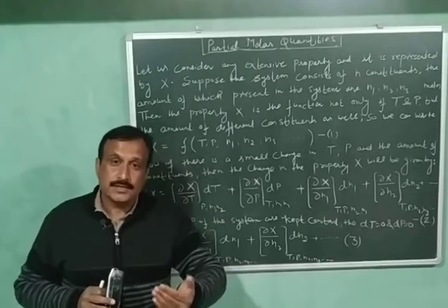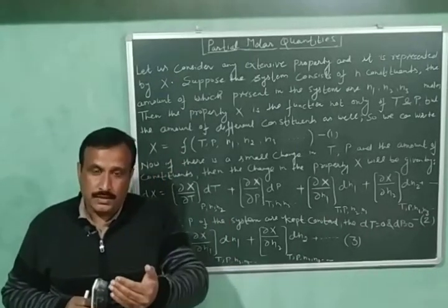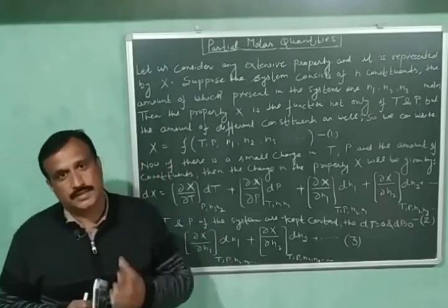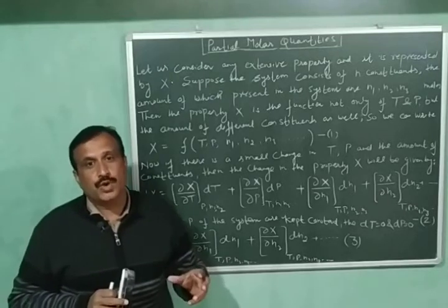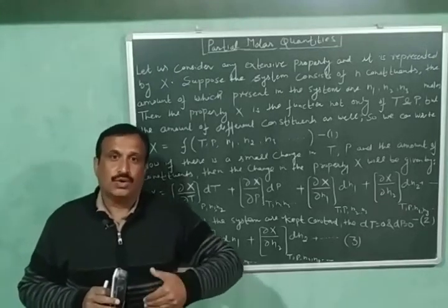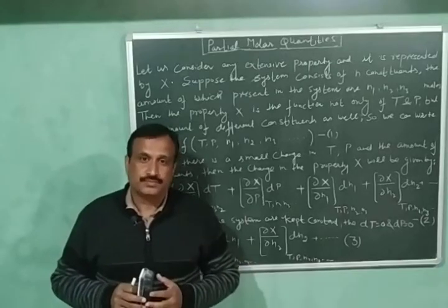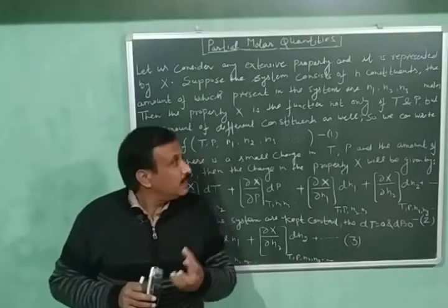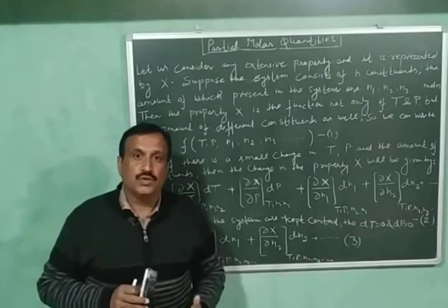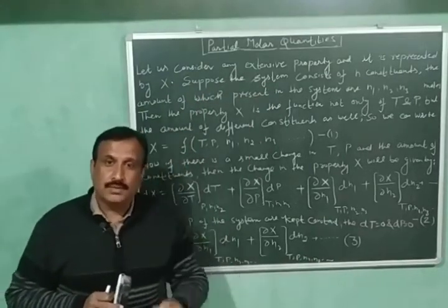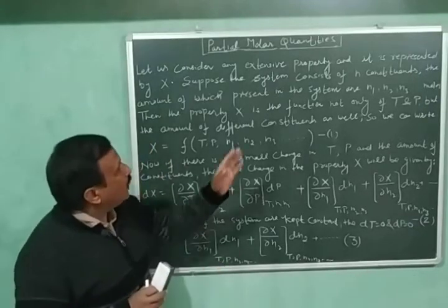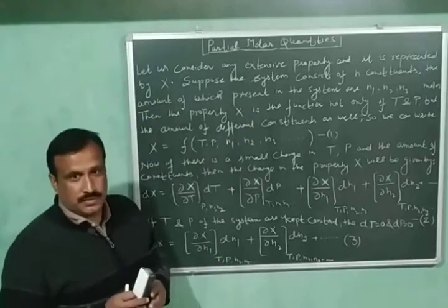Extensive properties depend upon the mass of the system or the quantity of mass present in the system, and the value of these properties changes with the change in mass or the change in the number of moles. So now, let us consider any extensive property — it could be internal energy, enthalpy, free energy, entropy, volume, etc. — and it is represented by X.